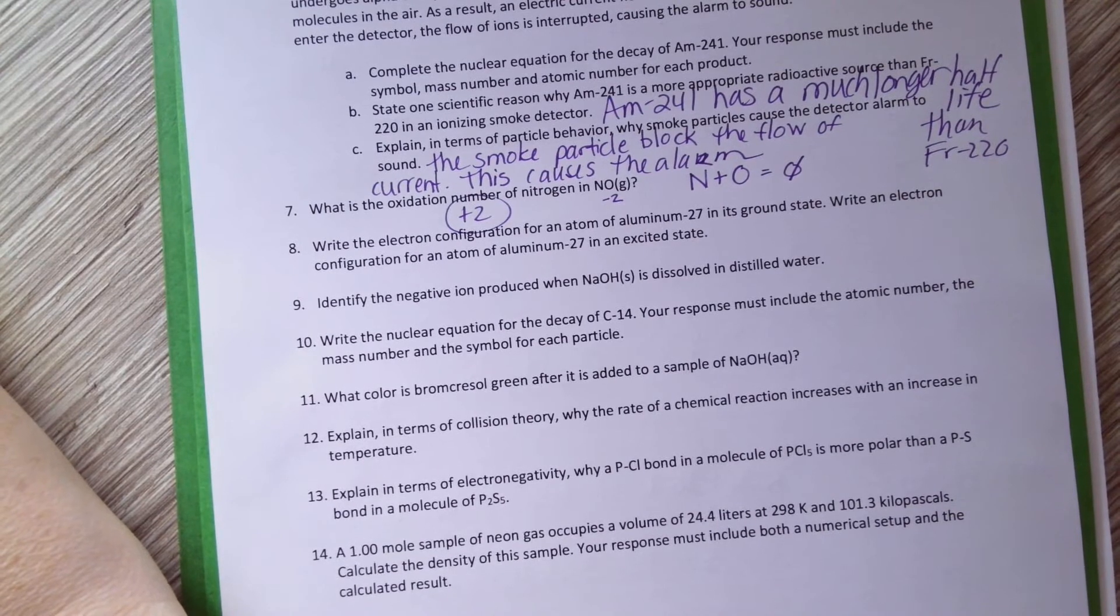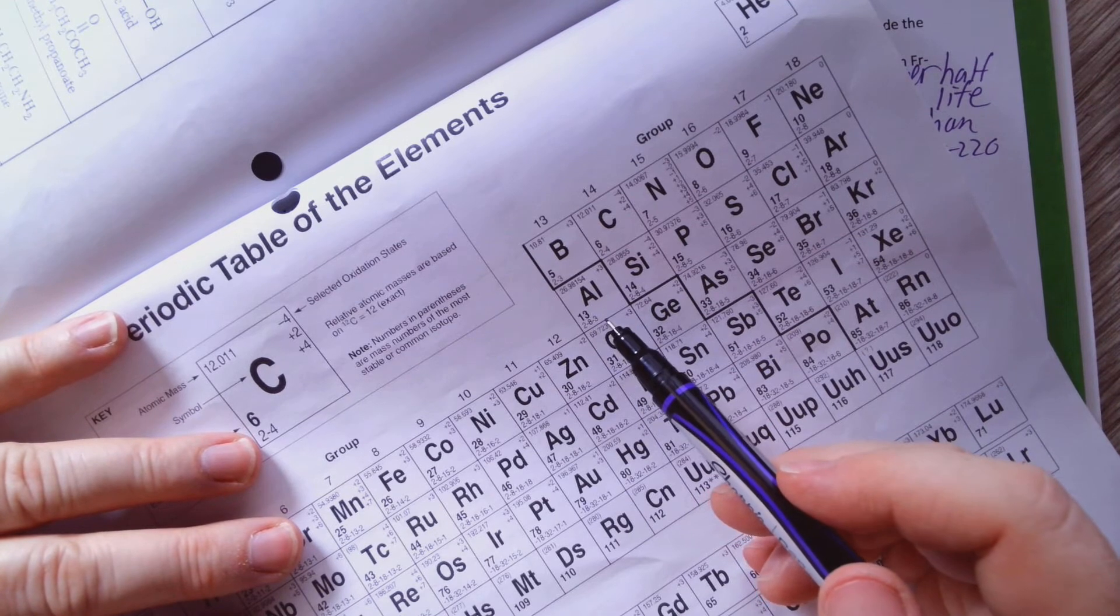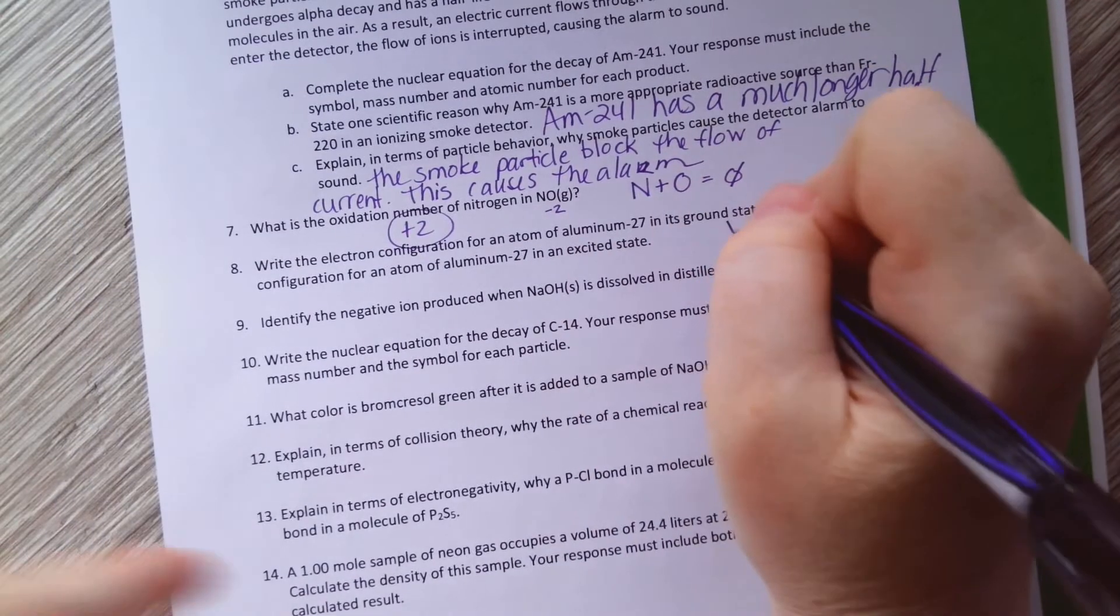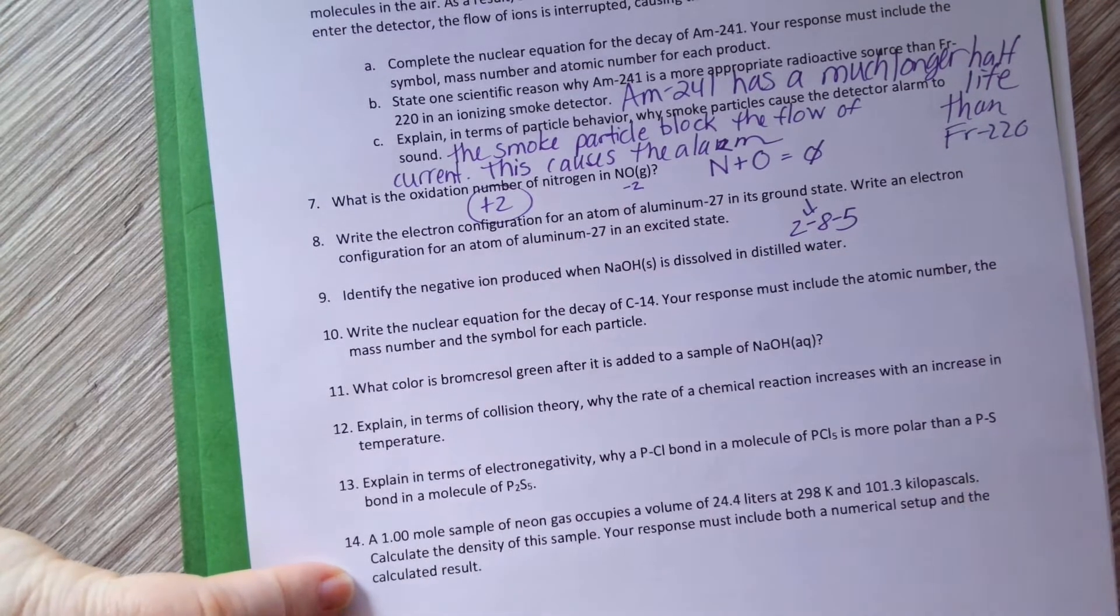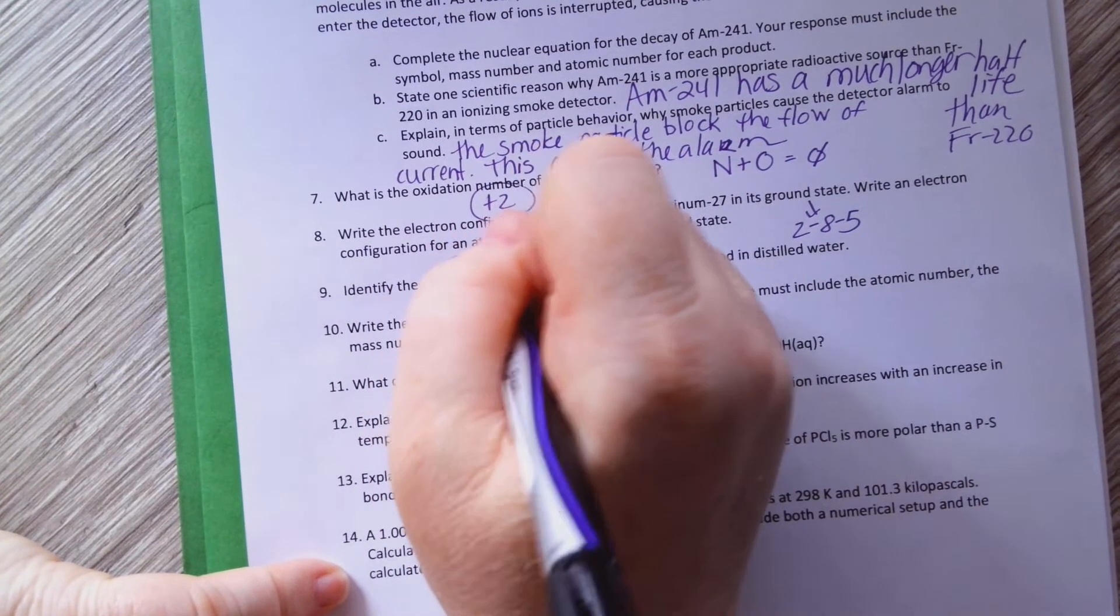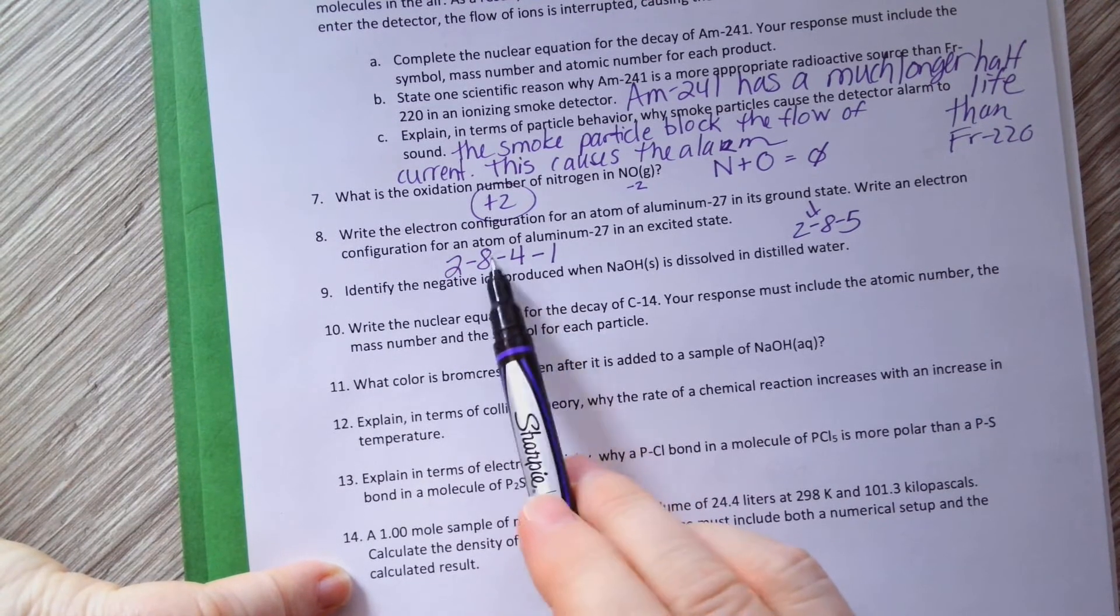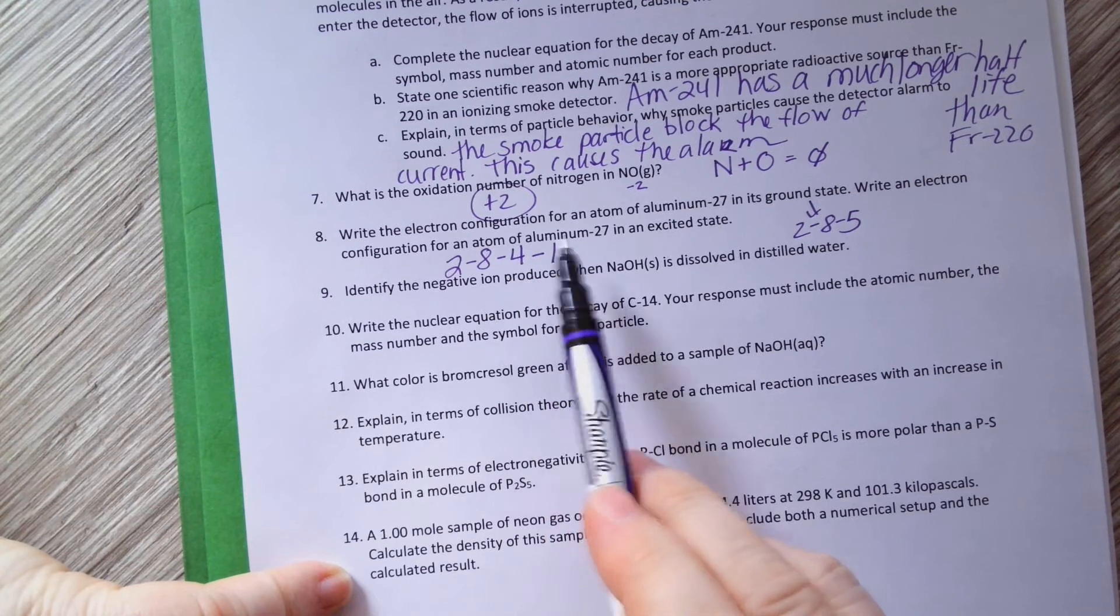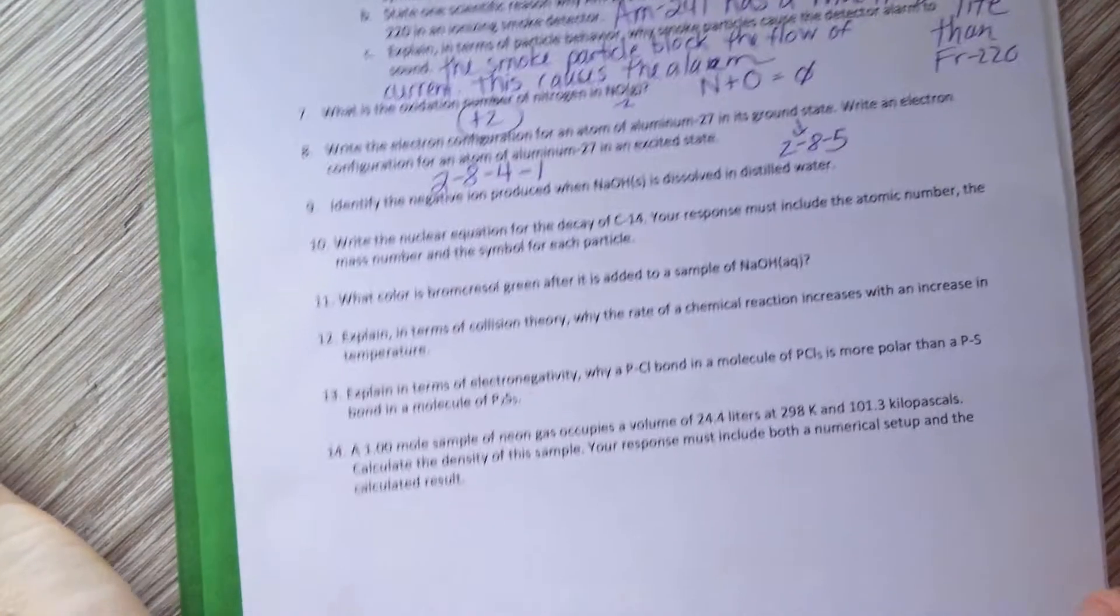Write the electron configuration for an atom of aluminum-27 in its ground state. So ground state, you just literally go to the periodic table and copy what you have: 2, 8, 3. So ground state: 2, 8, 3. Now write it for an excited state. So easiest way to write it in an excited state is take an electron and bump it up to a higher level, but you can't add more electrons, you just got to move one that you had. So I took one of these and bumped it up. I still have 2, 8, 4, 1. I still have 13 electrons. I can't change the number of electrons, I just want to move it.